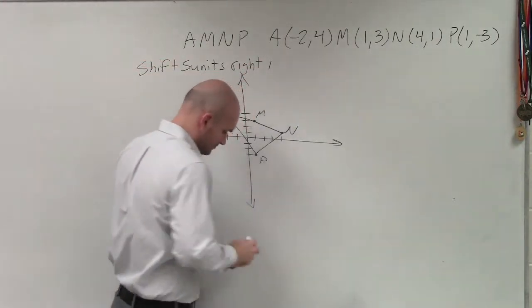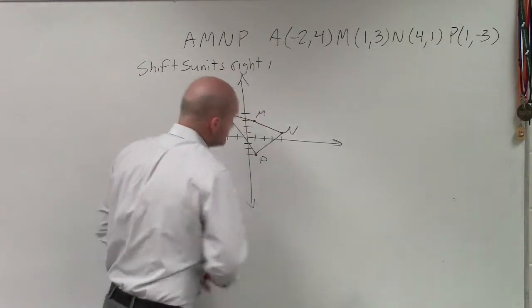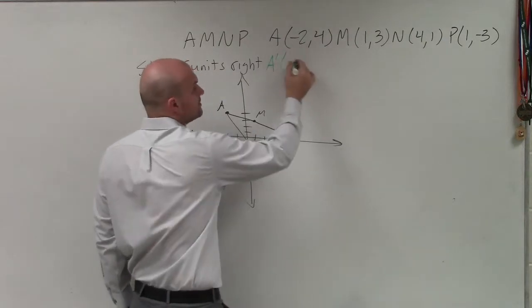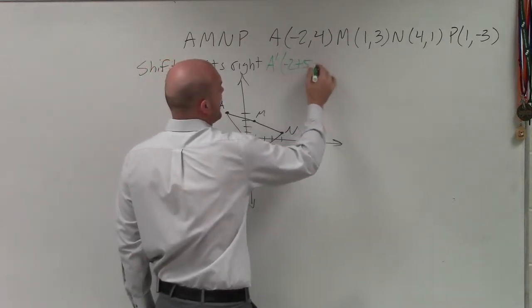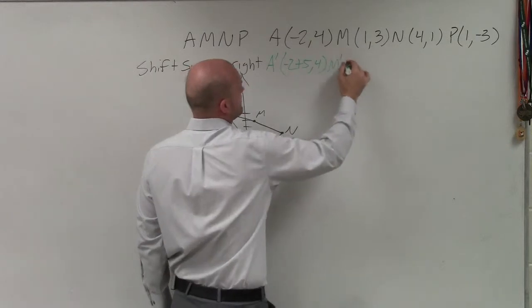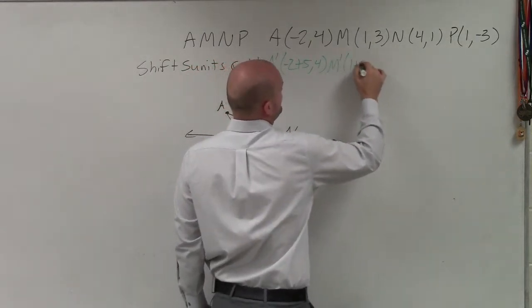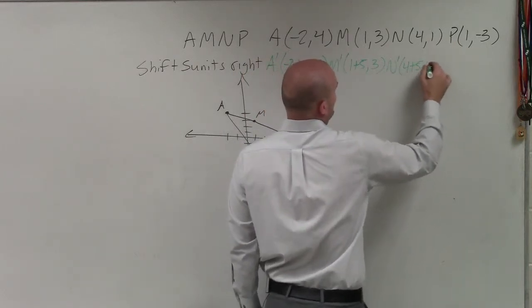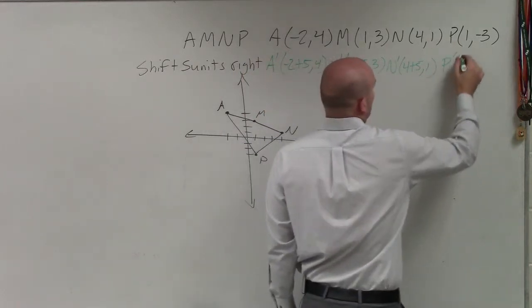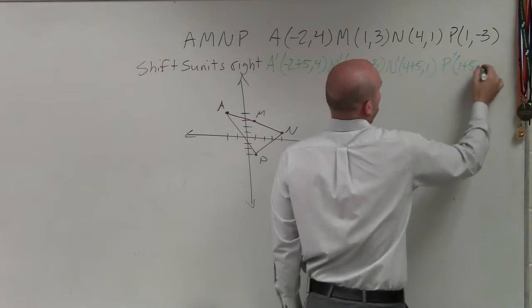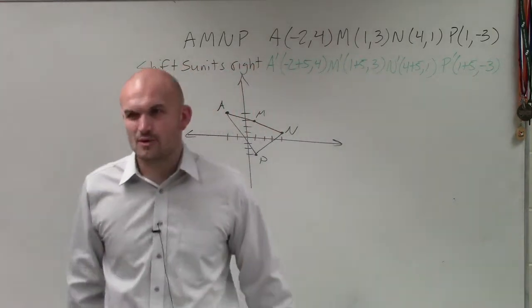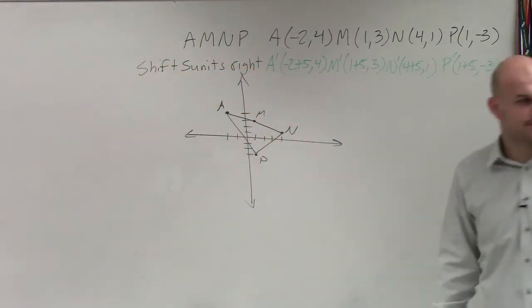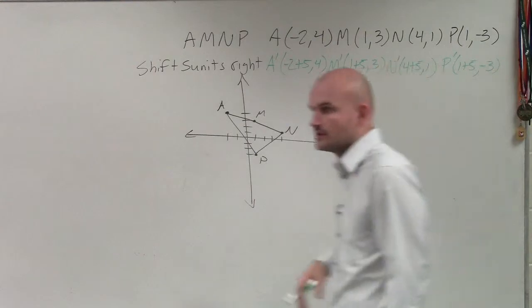So if I shift 5 units to the right, all we're going to do, ladies and gentlemen, is say A prime is now going to be negative 2 plus 5 comma 4. M prime is now 1 plus 5 comma 3. N prime is 4 plus 5 comma 1. And P prime is 1 plus 5 comma negative 3. Do you guys see how that works? You should be writing these new points. Do you guys see how those new points work?